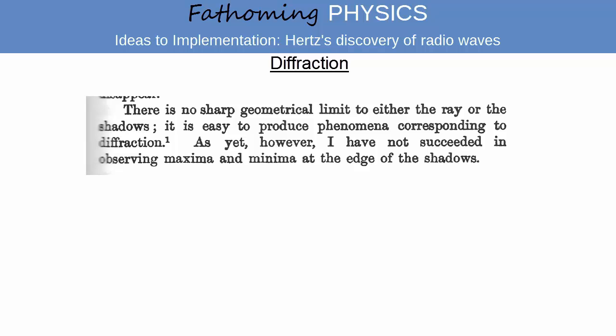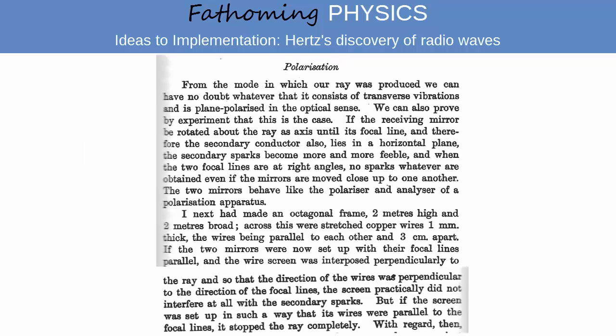Diffraction of the beam was established by the fact there were no sharp geometrical limit to the shadows formed by objects opaque to the beam. By constructing a frame with parallel copper wires stretched on it, Hertz was able to demonstrate that the radio waves he was producing were polarised.